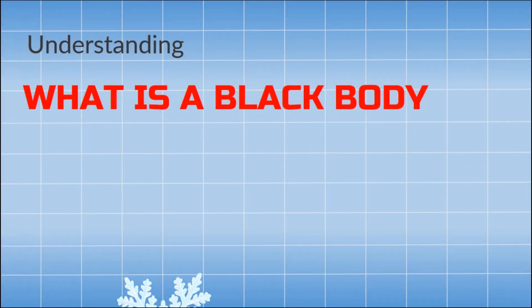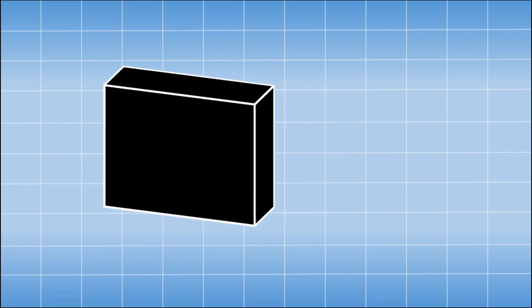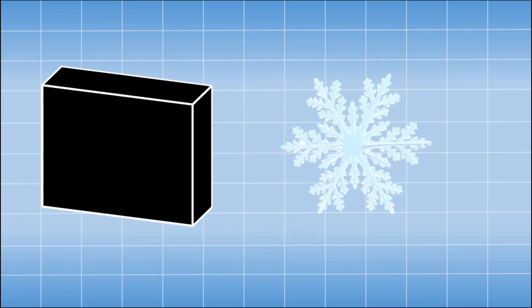Black body is a concept that every person working in thermal radiation comes across. But what is it really? Anything that looks black is a black body? Then why is snow considered to be a black body too?